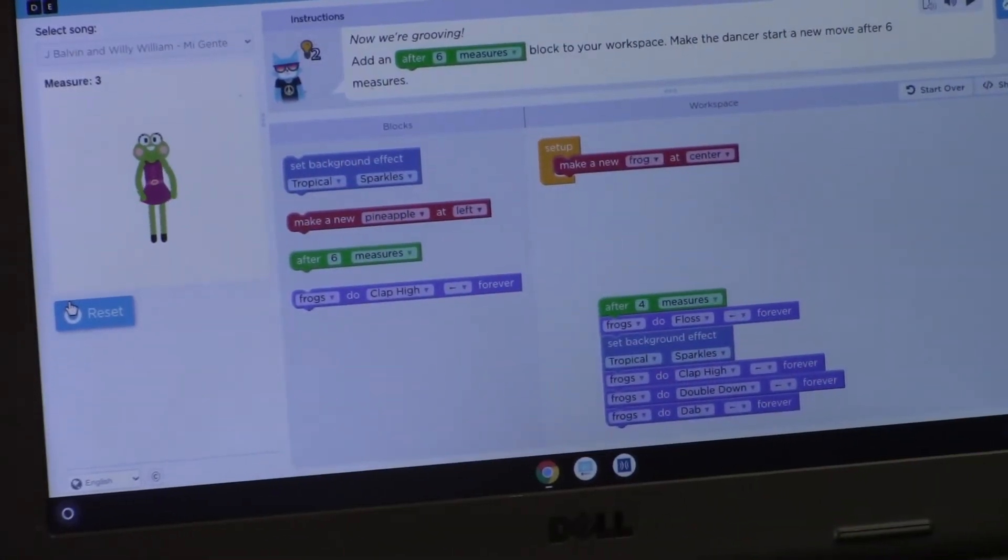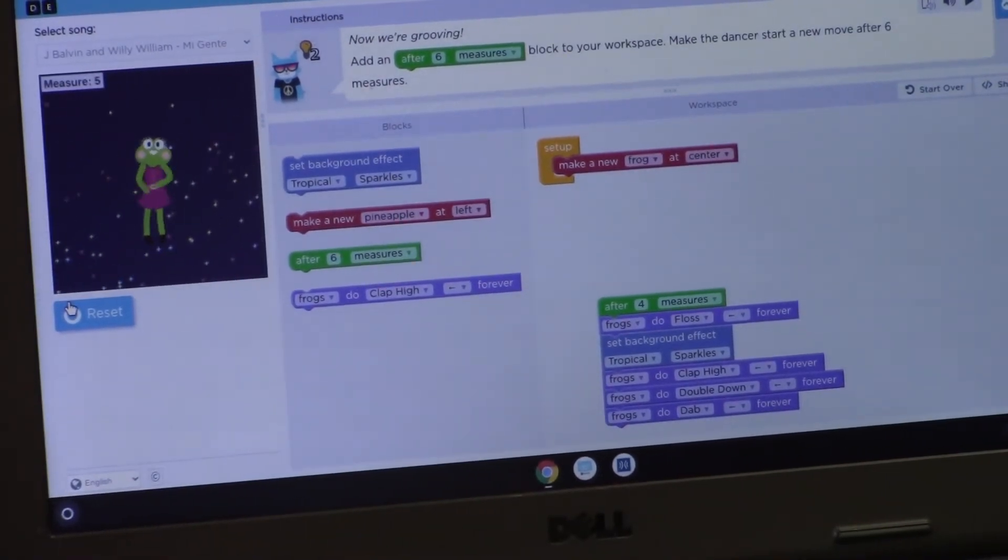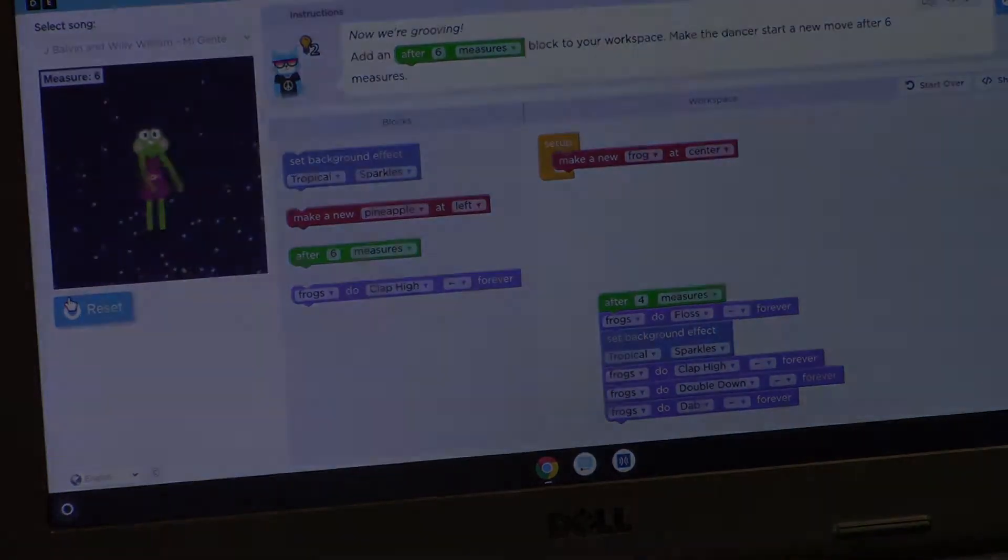Another station that we have in our robotics and coding session is just going to code.org which is on a Chromebook and it's actually a free website that anyone can go to.